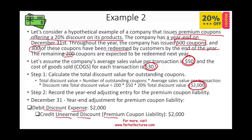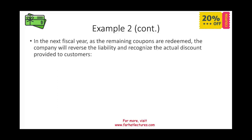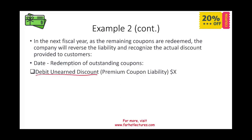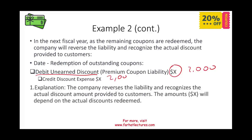Why do companies like Bed Bath & Beyond do this? To stimulate sales and increase revenue by offering 20% discounts. The following year, when customers come back and redeem those coupons, the company debits unearned discount — the premium liability — for $2,000 and credits discount expense $2,000. The company reverses the liability and recognizes the actual discount amount provided to the customer. This is how the accounting for premium liabilities works.